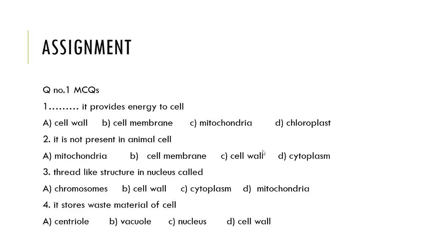MCQ number 3: thread-like structures in the nucleus are called? Option A: chromosome, Option B: cell wall, Option C: cytoplasm, Option D: mitochondria. The correct answer is chromosome, Option A. MCQ number 4: which organelle stores waste material of a cell? Option A: centriole, Option B: vacuole, Option C: nucleus, Option D: cell wall. The correct answer is vacuole; it stores waste material of a cell.